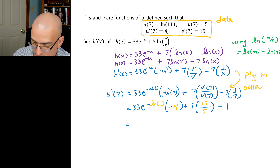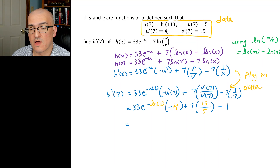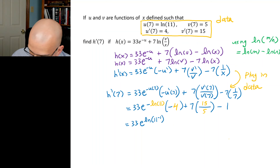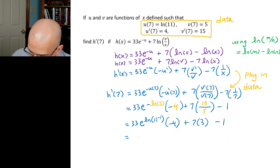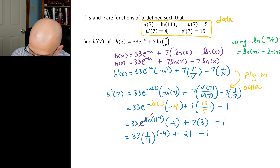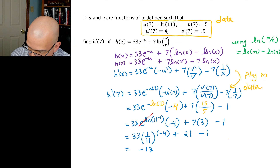To simplify e^(−ln 11): the negative sign means we bring up a power of −1, giving e^(ln(11^(−1))). The e-ln cancels, leaving 1/11. So 3 × (1/11) × (−4) + 7 × 3 − 1 = 33/11 × (−4) + 21 − 1 = 3 × (−4) + 20 = −12 + 20 = 8.